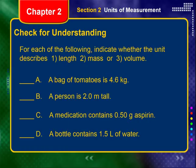For each of the following, indicate whether the unit describes a length, a mass, or a volume. A pack of tomatoes in kilograms — that is mass. A person two meters tall — that is length. 0.50 grams of aspirin — that is mass. 1.5 liters of water — that is volume.